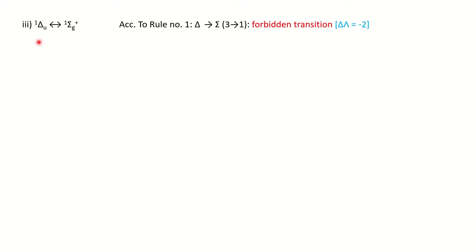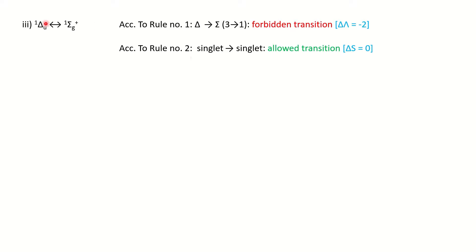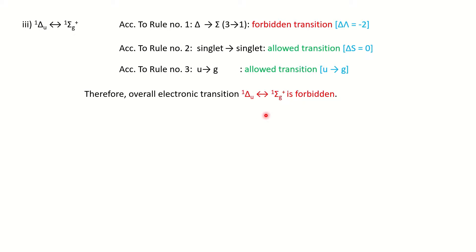Problem 3: ¹Δu→¹Σg. Rule 1: Δ is λ=2, Σ is λ=0, so Δλ=2 — forbidden. Rule 2: singlet to singlet (ΔS=0) — allowed. Rule 3: u→g — allowed. Overall, since Rule 1 is violated, this transition is a forbidden transition.